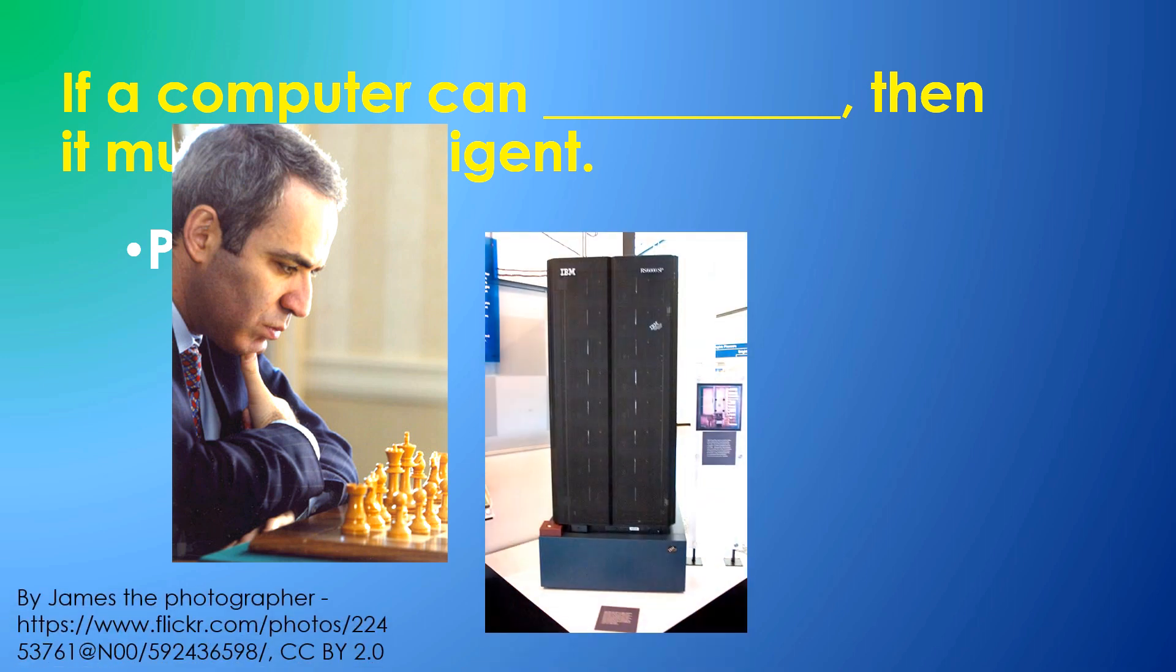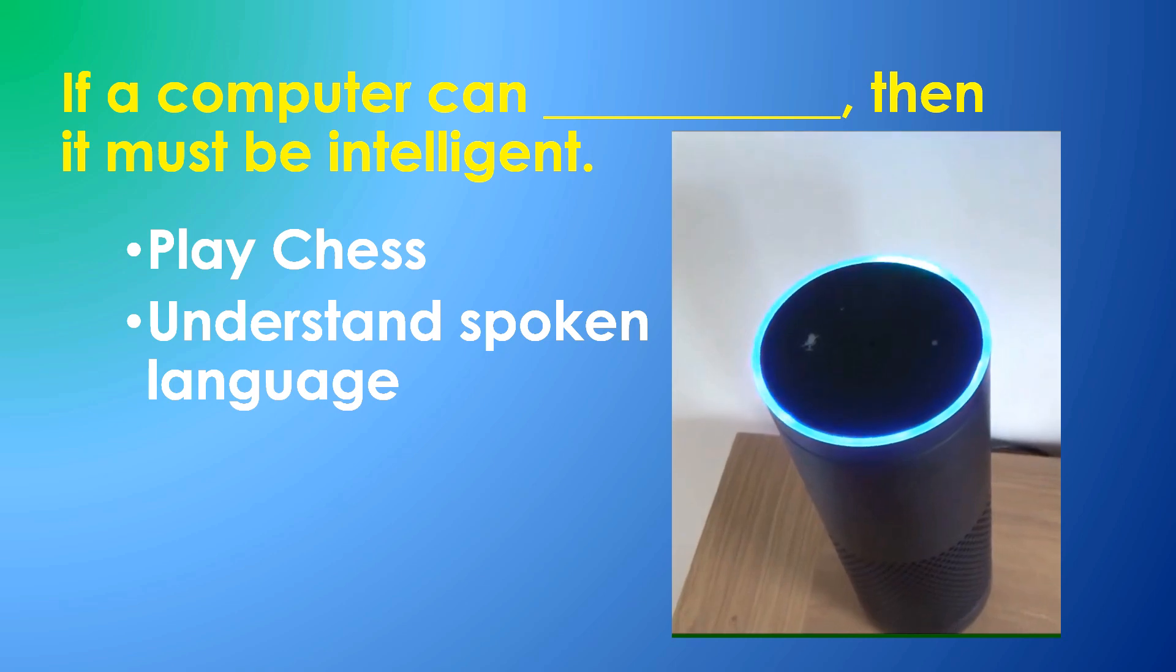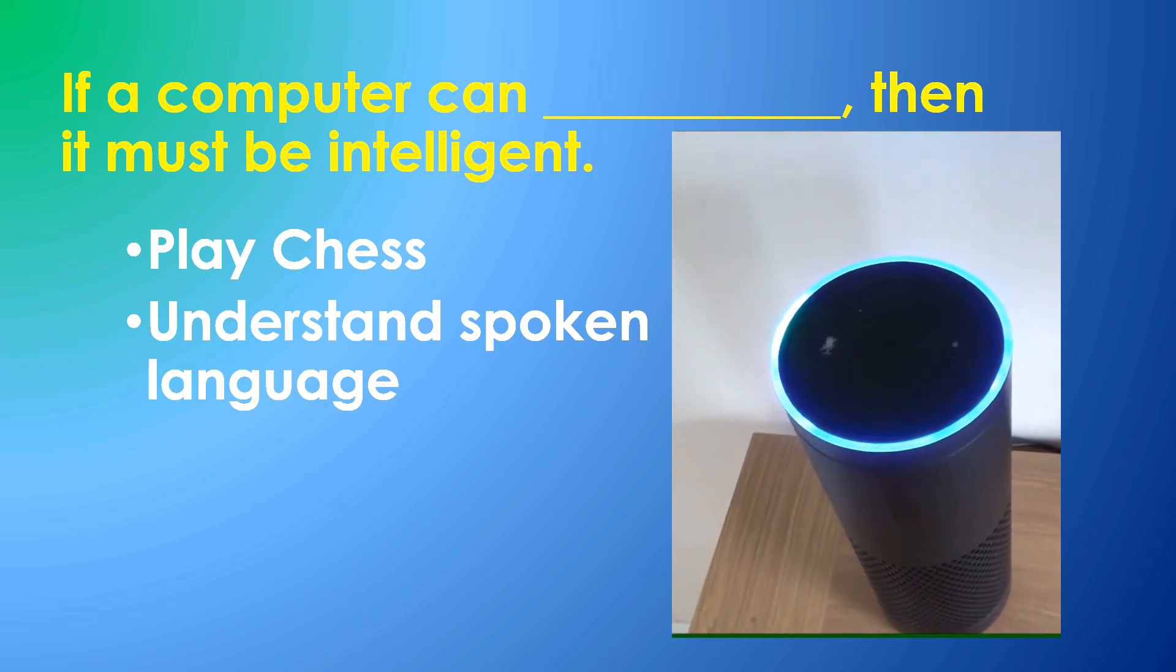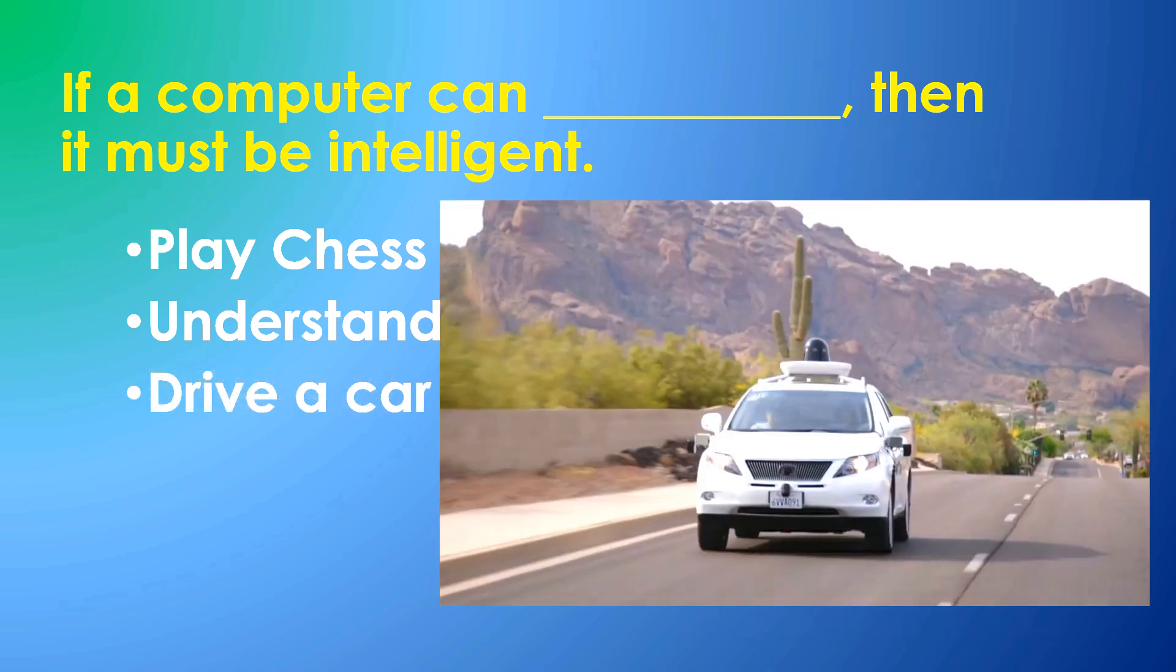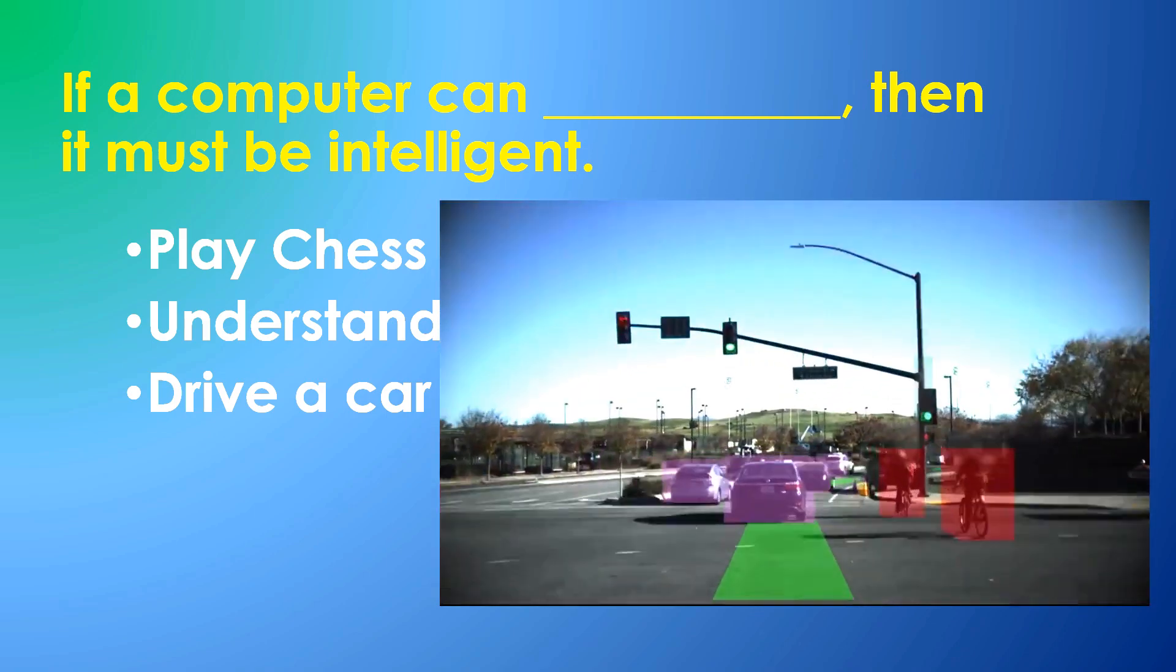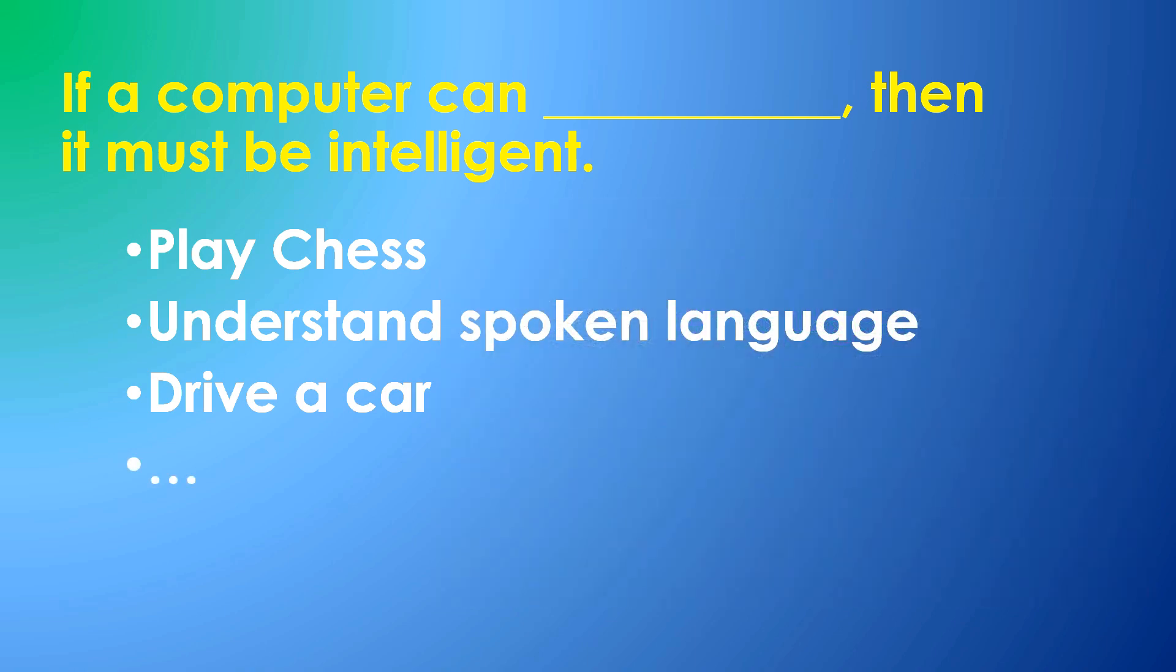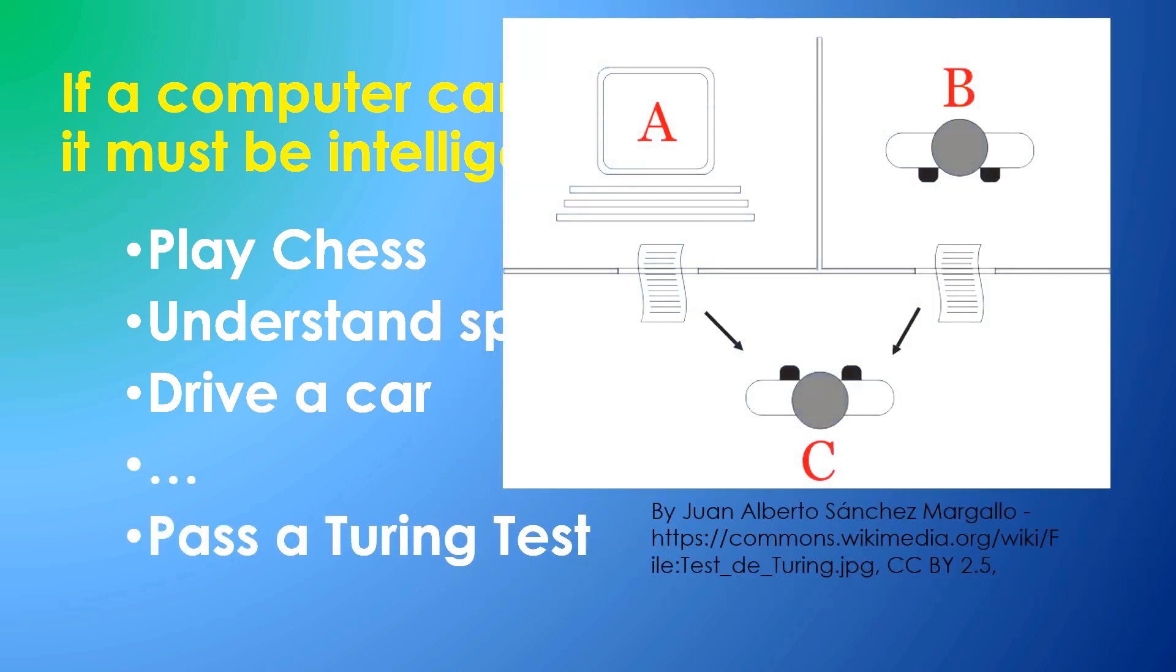When computer programs were subsequently developed which played an excellent game of chess that showed no other signs of intelligence, we had to admit that the definition was too narrow. So we added to the list and created applications, including the ability to understand spoken language, more recently to drive a car, plus other activities including attempting to pass a Turing test, which will get a video of its own.